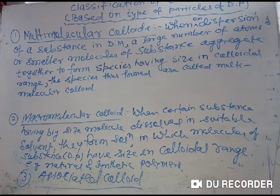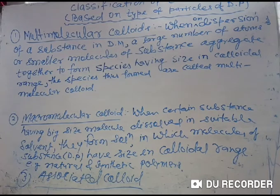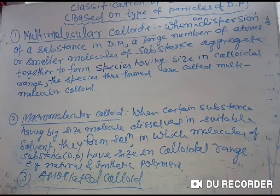There are three types of colloids. The first is called multi-molecular colloid, the second is macromolecular colloid, and the third one is associated colloid. First, we are going to discuss multi-molecular colloid. What is multi-molecular colloid?